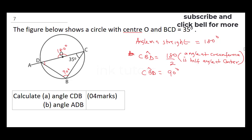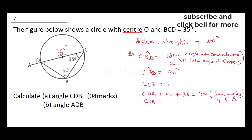So angle CBD is 90 degrees. For us to find angle CDB, notice that angle CDB plus 90 plus 35 equals 180 — this is the sum of angles in a triangle. Therefore, CDB plus 125 equals 180, so CDB equals 180 minus 125, which gives us 55 degrees.